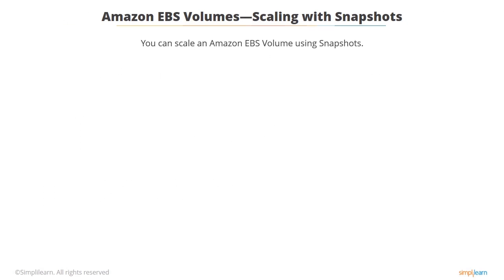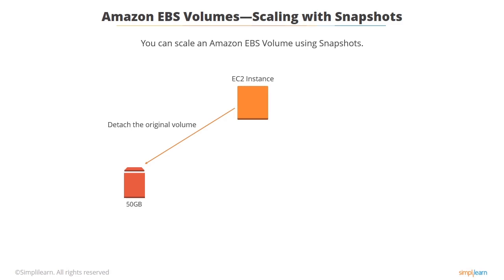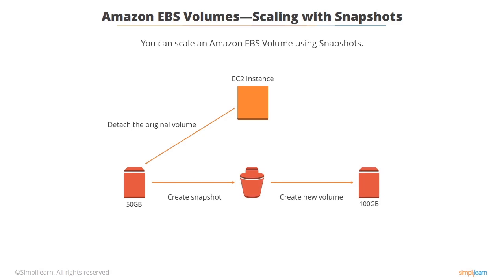You can scale an Amazon EBS volume using snapshots. If you are performing the process on the root volume, be sure to stop the instance before detaching the original volume. Then detach the original volume — if it is the root volume, you will have to perform this action from the management console or from another Amazon EC2 instance. Create a snapshot of the detached volume, then use the AWS EC2 create volume command to create a new volume, specifying that the volume will be created from the snapshot you previously took of the smaller or larger volume.